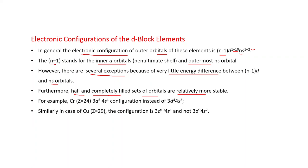That is why we will get exceptions to this general electronic configuration. For example, in 11th standard you discussed chromium atomic number 24. Its electronic configuration is 3d^5 4s^1 instead of 3d^4 4s^2 because in this case the D orbital is half-filled and the S orbital is also half-filled. Similarly, in case of copper atomic number 29, its electronic configuration is 3d^10 4s^1, not 3d^9 4s^2.